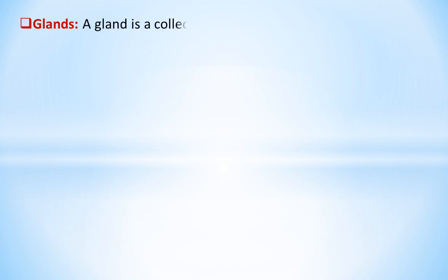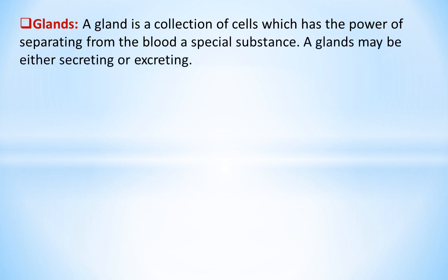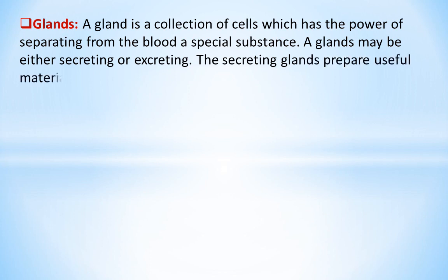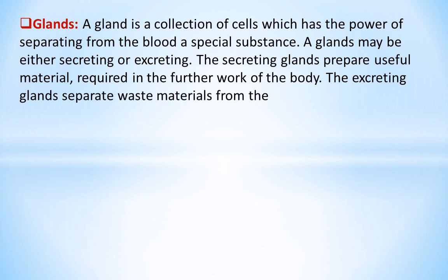A gland is a collection of cells which has the power of separating from the blood a special substance. A gland may be either secreting or excreting. The secreting glands prepare useful material required in the further work of the body. The excreting glands separate waste materials from the blood for their immediate removal.